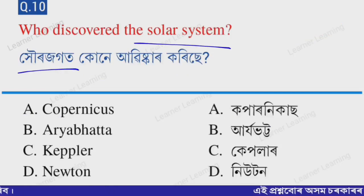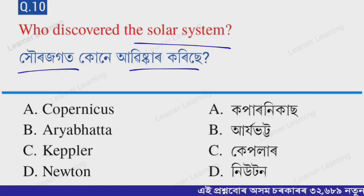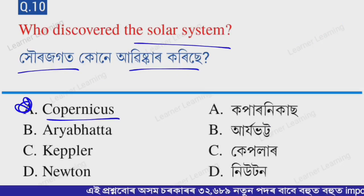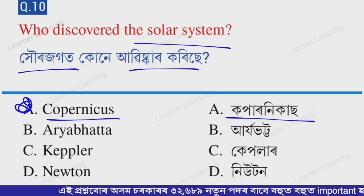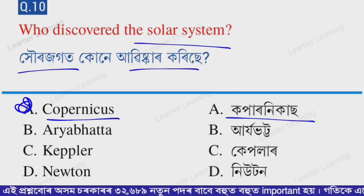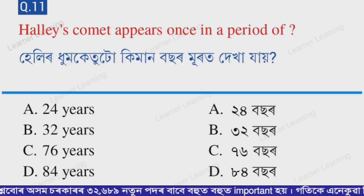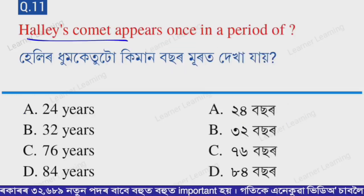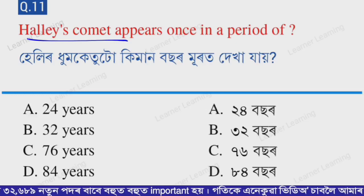Next question: Who discovered the solar system? Select from the options. Option A — Copernicus. Copernicus discovered the solar system. Please keep this in mind.